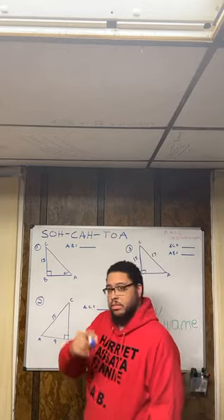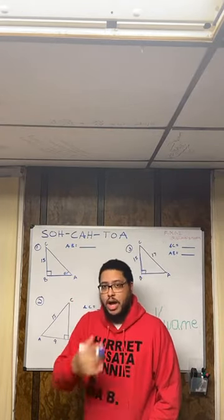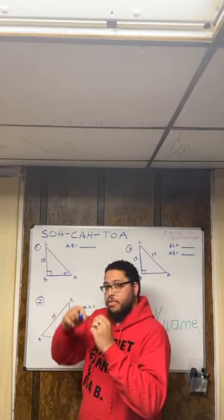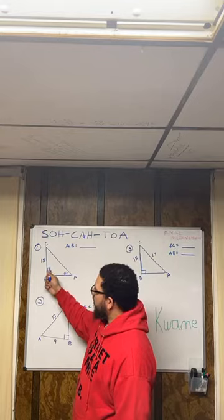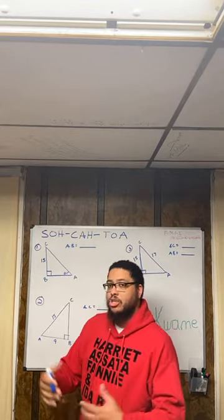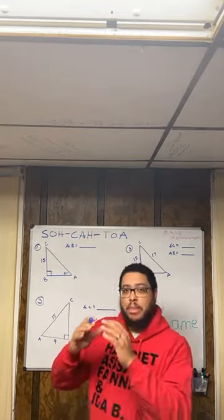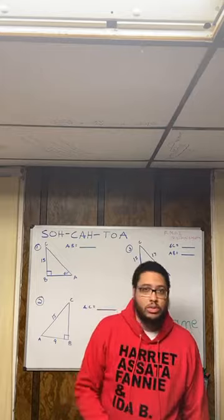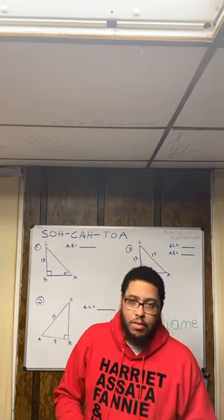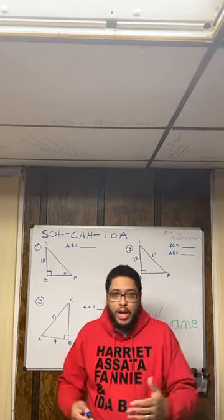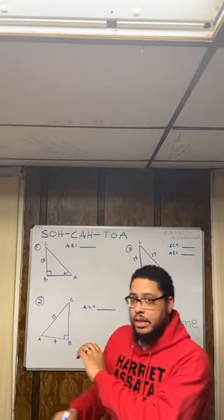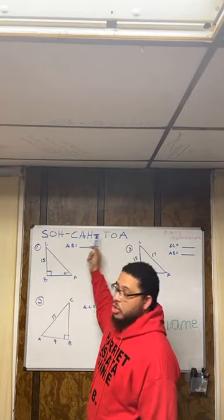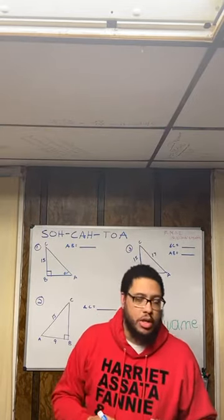A triangle is a polygon with three sides — the prefix 'tri' means three. A right triangle is a specific type of triangle that has a right angle: an angle that, if you measured it with a protractor, would measure 90 degrees. There are other types of triangles — isosceles, scalene — but today's lesson is all about right triangles and how we figure out missing information using trigonometric ratios, which only work for right triangles.